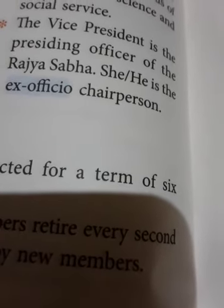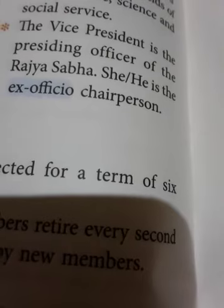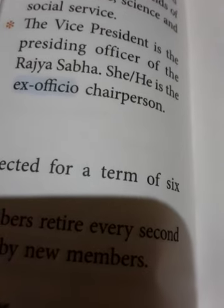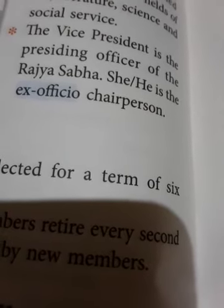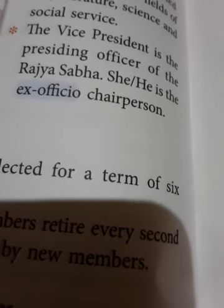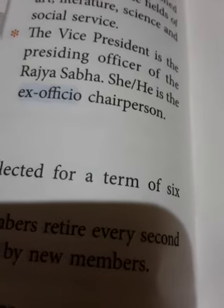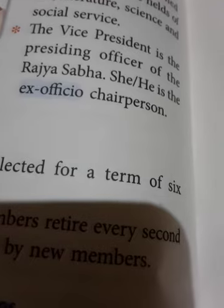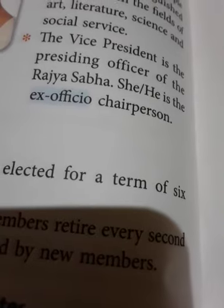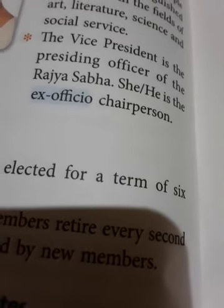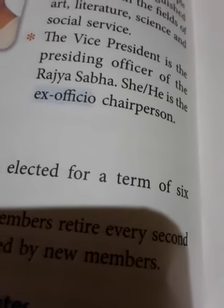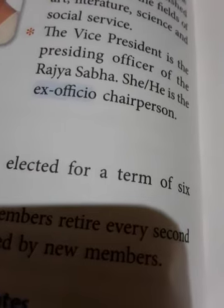Control over the Executive: Parliament exercises a fair amount of control over the activities of the government. During the question hour, any member can put up questions and the concerned ministers are bound to answer them. This keeps the executive alert. Members can move a call attention motion or adjournment motion on any urgent matter. If such a motion is permitted by the Speaker, then the minister in charge of a particular department is held answerable. The government is answerable to Parliament for all its acts of commission or omission. Parliament can pass a no-confidence vote and compel the government to resign.